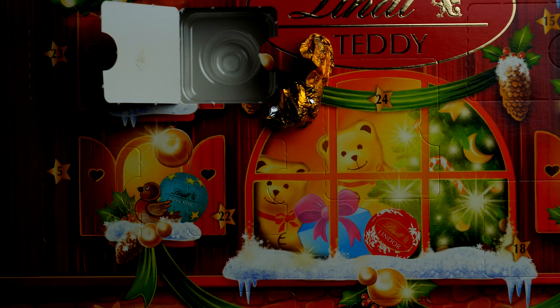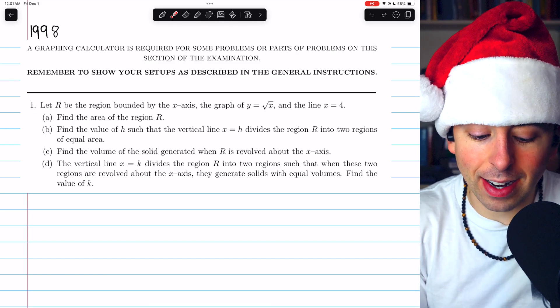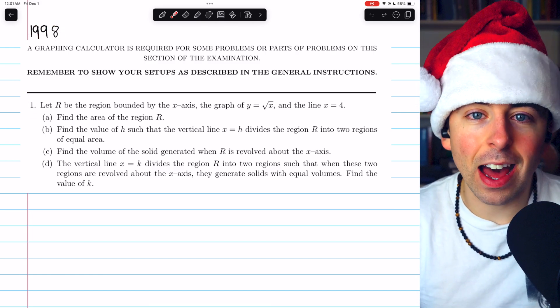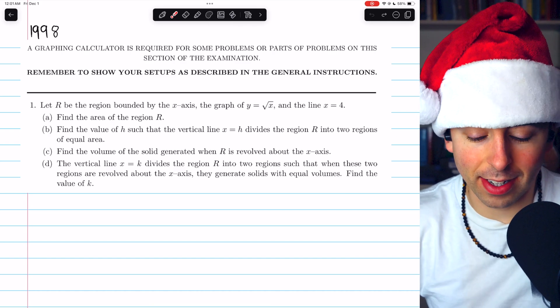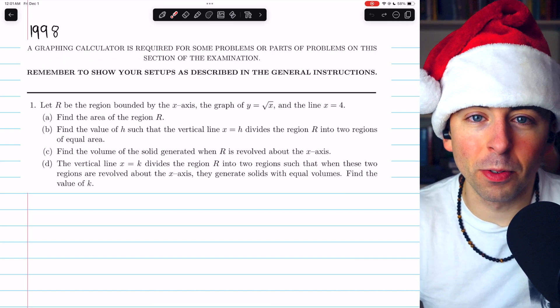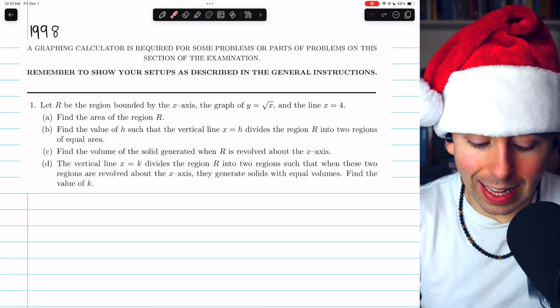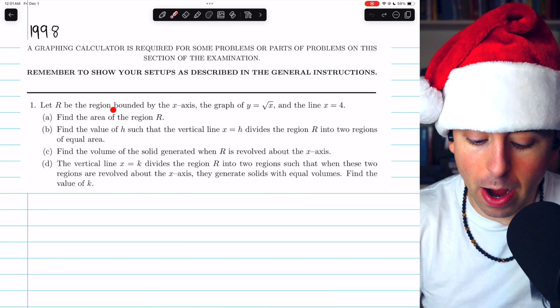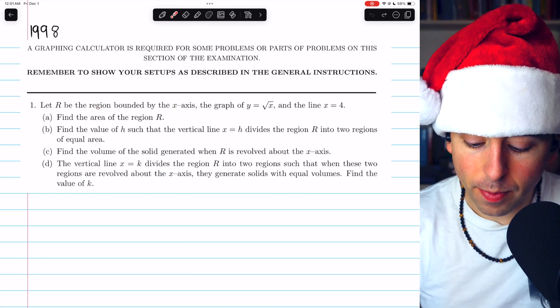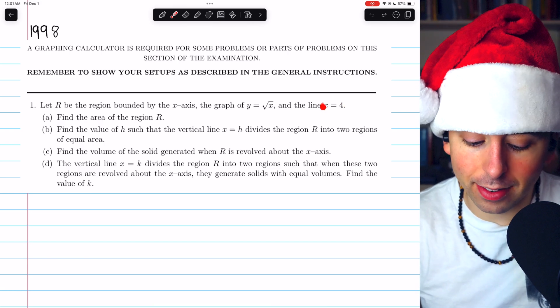Let's get into the math. This is problem one from the 1998 AP Calc exam. And as we can see, this is from the graphing calculator section. So we may find ourselves in need as we go through this problem. Let's read it. Let R be the region bounded by the x-axis, the graph of y equals root x, and the line x equals 4.